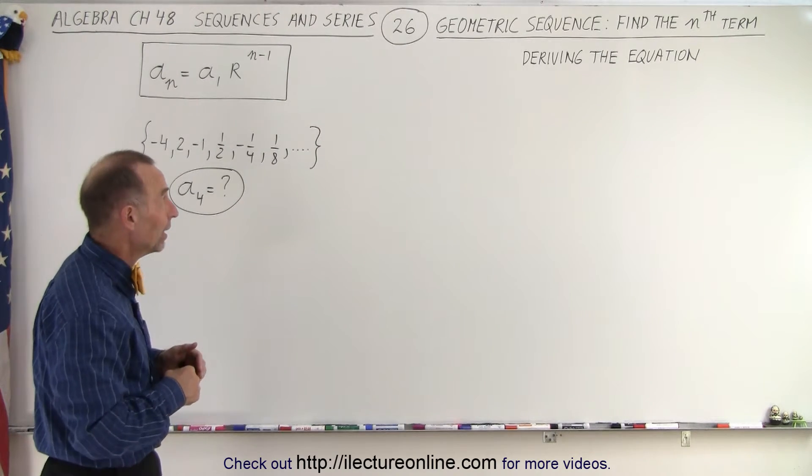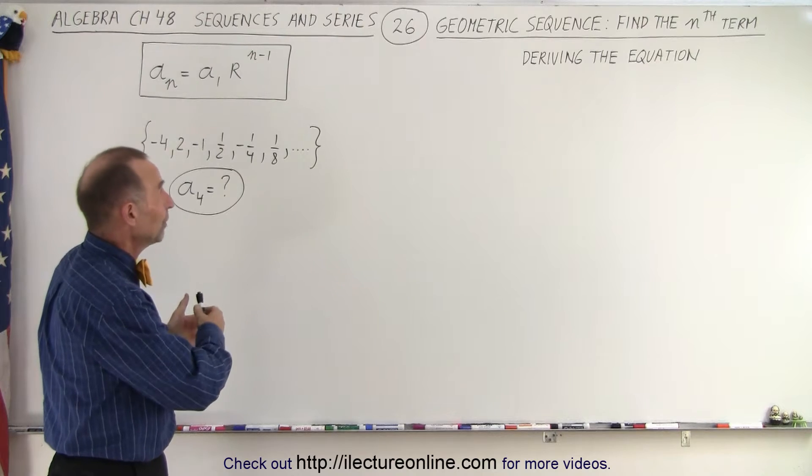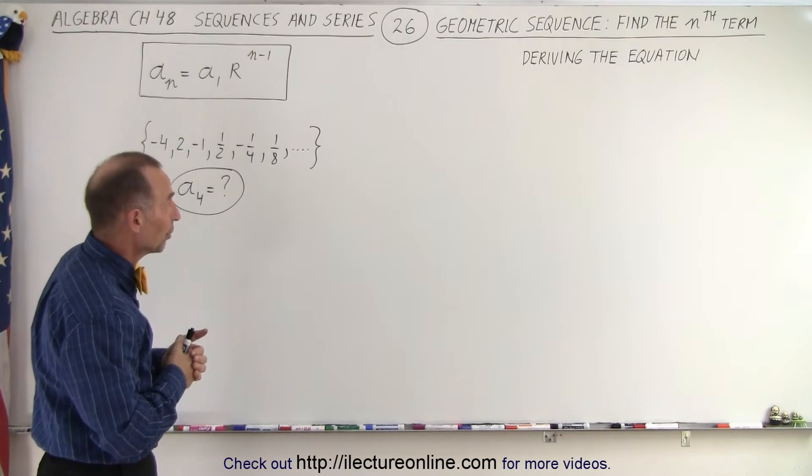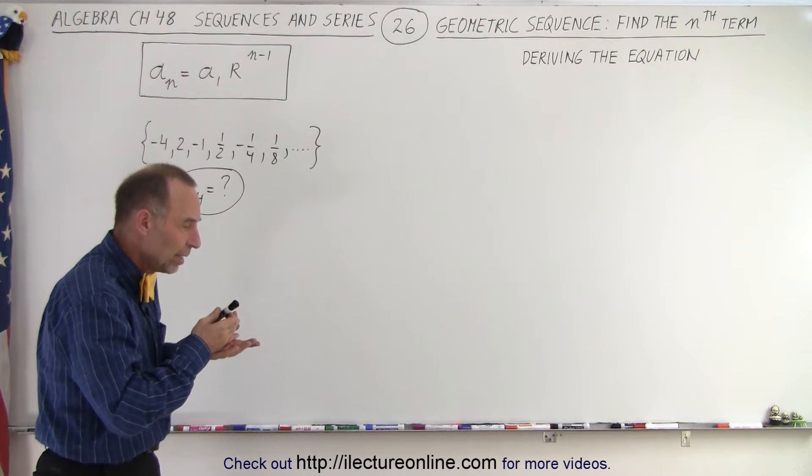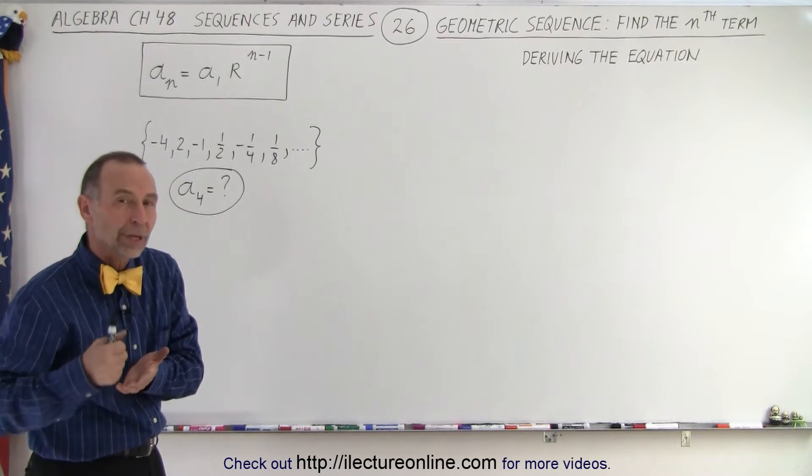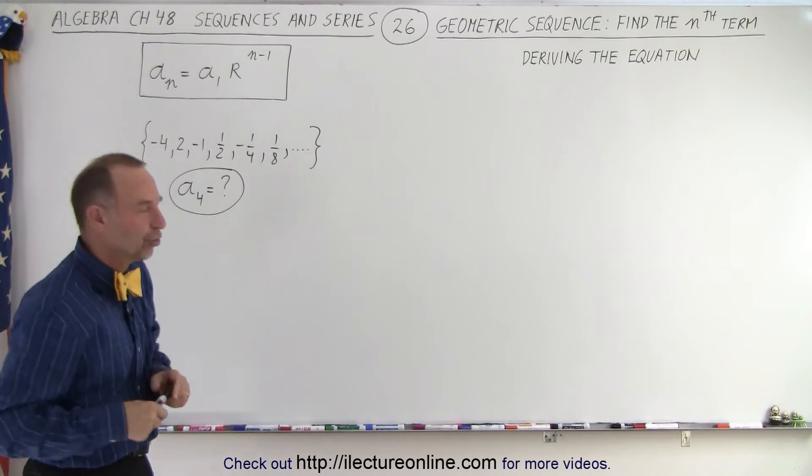Essentially it's the same thing in a way to find the nth term in that particular order of numbers. But with a geometric series or geometric sequence we know that there's a common ratio between one term and the next term.